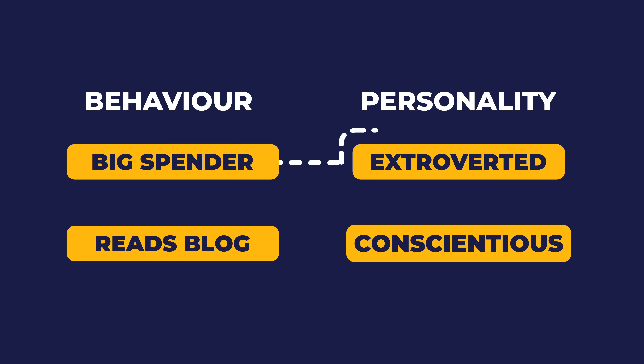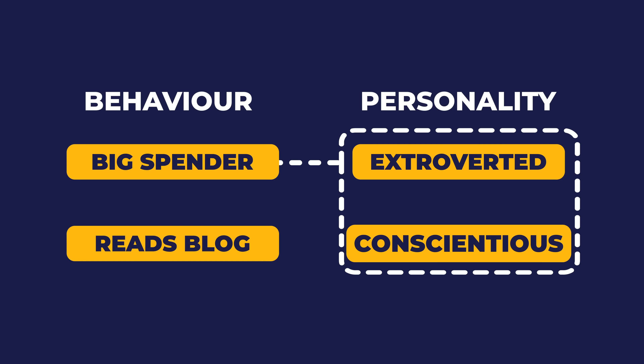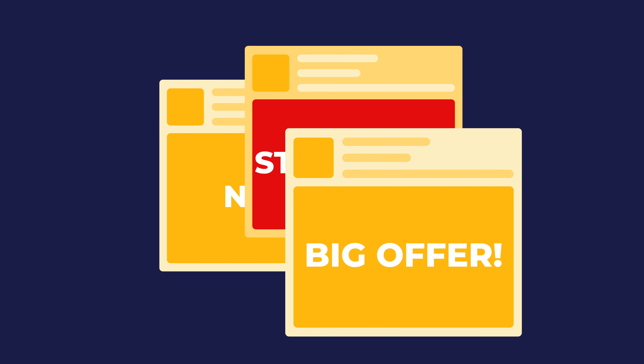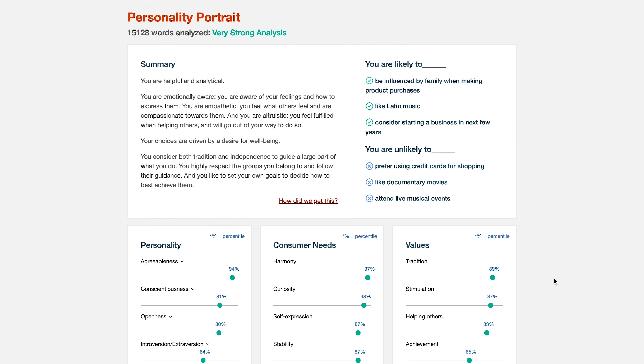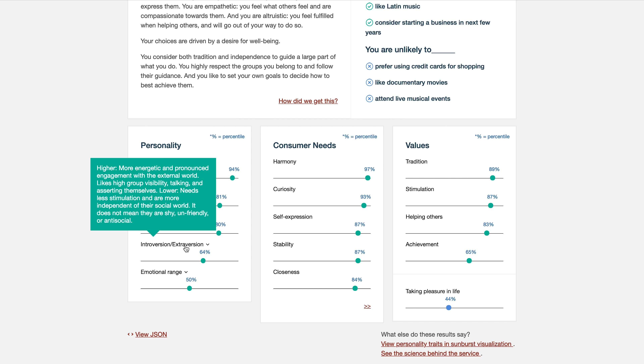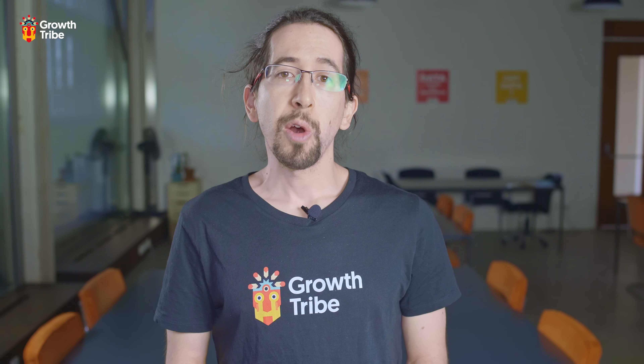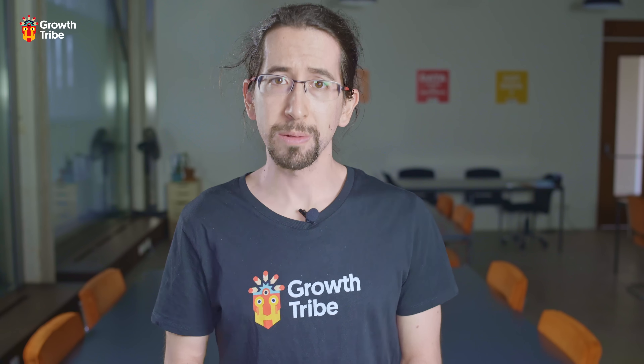If you're already doing psychographic analysis, you might have certain traits to describe Bernardo. However, it's only when you use AI that you realize there's a correlation between the big spend of money and the fact that Bernardos are extroverted and conscientious. That means you can create adverts that resonate with these traits. If you want to try psychographic analysis, I recommend you go to IBM Watson Personality Insights. We also cover this in way more detail in our AI course for marketing and growth.